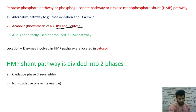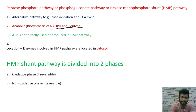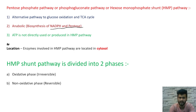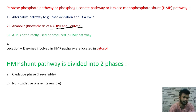Location is an important point: the enzymes involved in the HMP pathway are located in the cytosol, so you can get a direct question from this point. The HMP pathway is divided into two phases: the oxidative phase, which is irreversible in nature — and irreversible steps are mainly the regulatory steps — and the non-oxidative phase, which is reversible in nature.